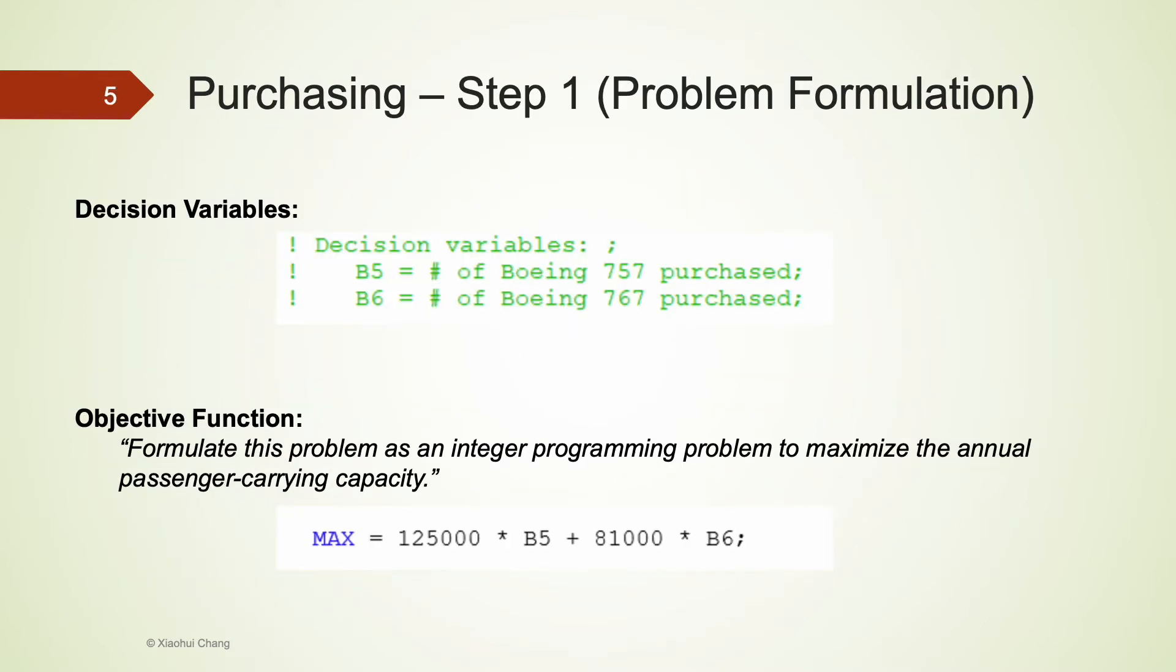In this example, the company is trying to decide how many 757 and how many 767 they should purchase, so two decision variables. I use B5 to represent the number of Boeing 757 purchased and B6 to represent the number of 767 purchased. The objective of this decision problem is to maximize the annual passenger carrying capacity. Given that each 757 carries 125,000 passengers and each 767 plane carries 81,000 passengers, we can calculate the total annual passenger carrying capacity using B5 and B6 defined above. We use MAX here to maximize it in LINGO.